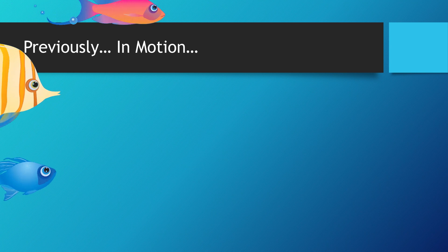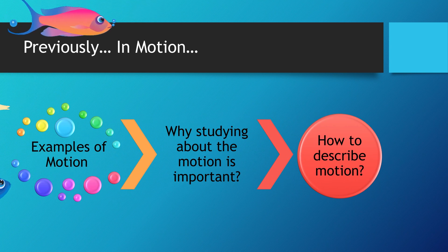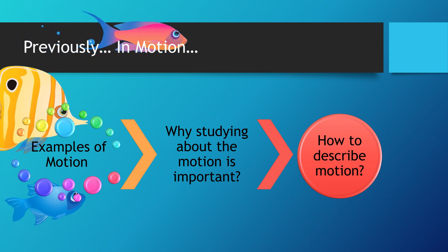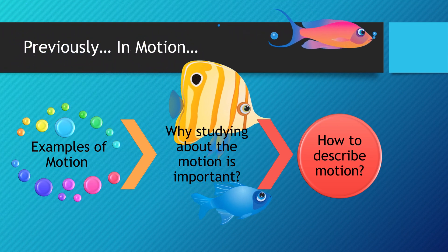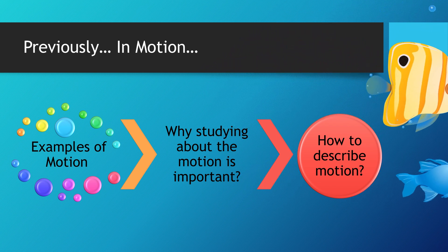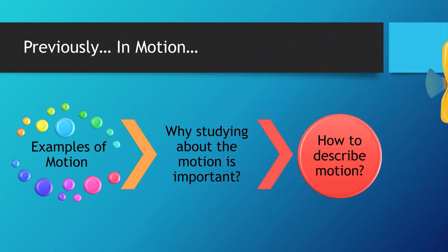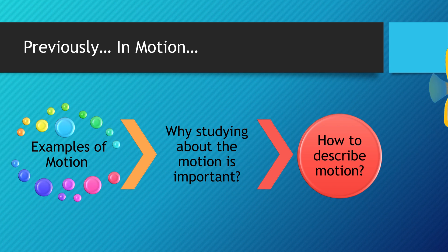In the previous video we studied about examples of motion, types of motion, and we understood why studying motion is important. We tried to understand how to describe motion — whether a body is at rest or in motion — what is a reference frame, what is a reference point. In this video we are going to understand the basic difference between distance and displacement. We'll do two simple questions, and at the end there will be a homework question for you to answer in the comment section.